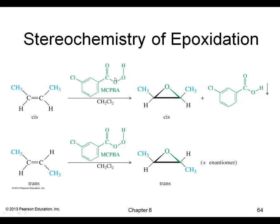Here's MCPBA's structure. Note that if you start with cis-2-butene, you end up with the cis epoxide. If you start with the trans alkene, you get the trans epoxide.